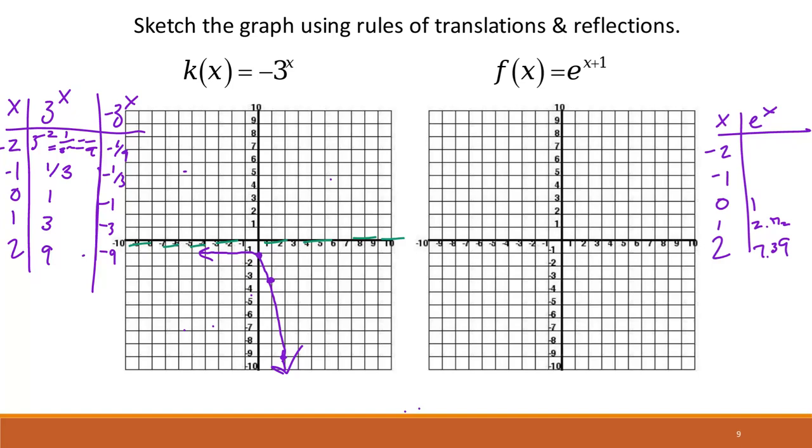So those will be our original points. If we add one, we're just shifting everything up one, right?